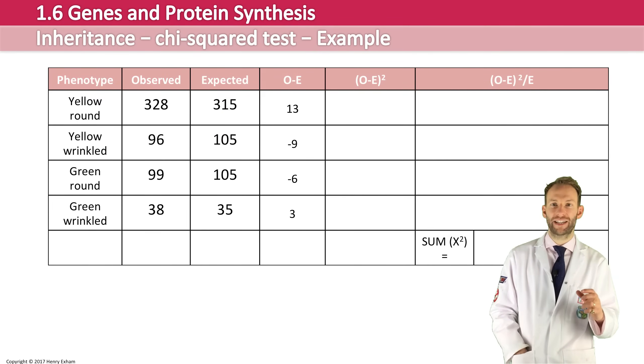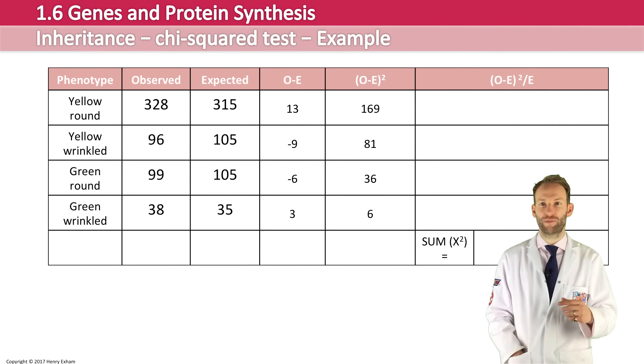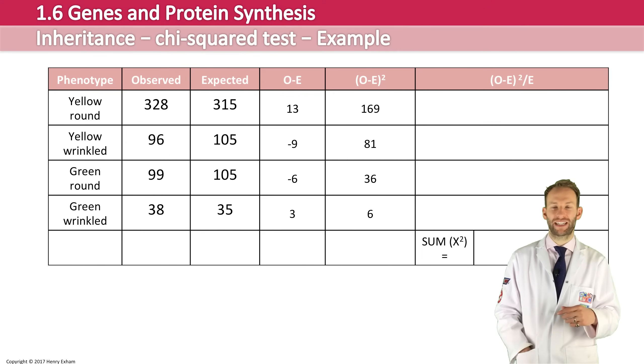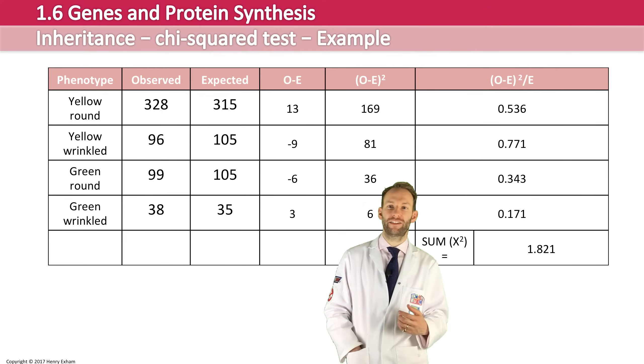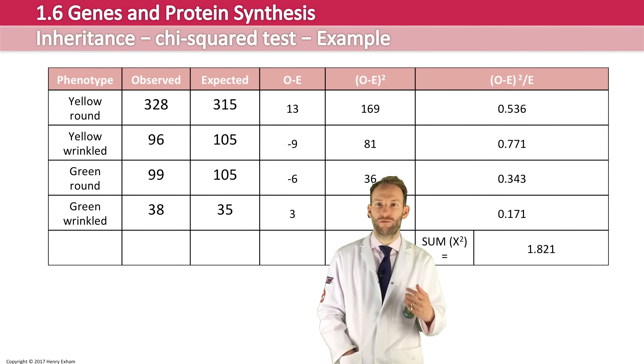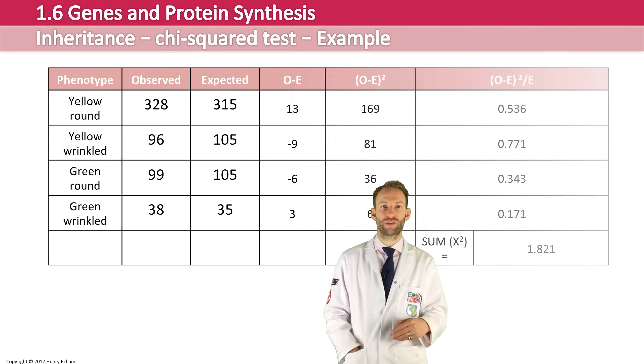Then very simply take that number and you square it for each one. And then the last thing to do is to take that number and divide that by the expected. Then you just sum up all of those together, and we end up with our chi-squared value of 1.821. Hooray! 1.821.